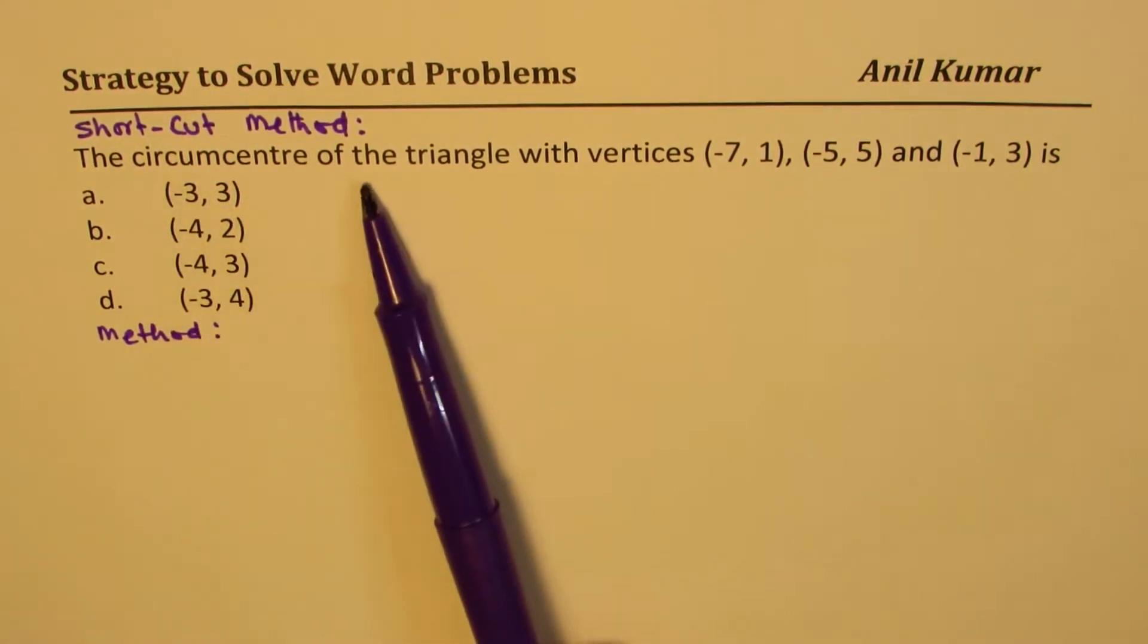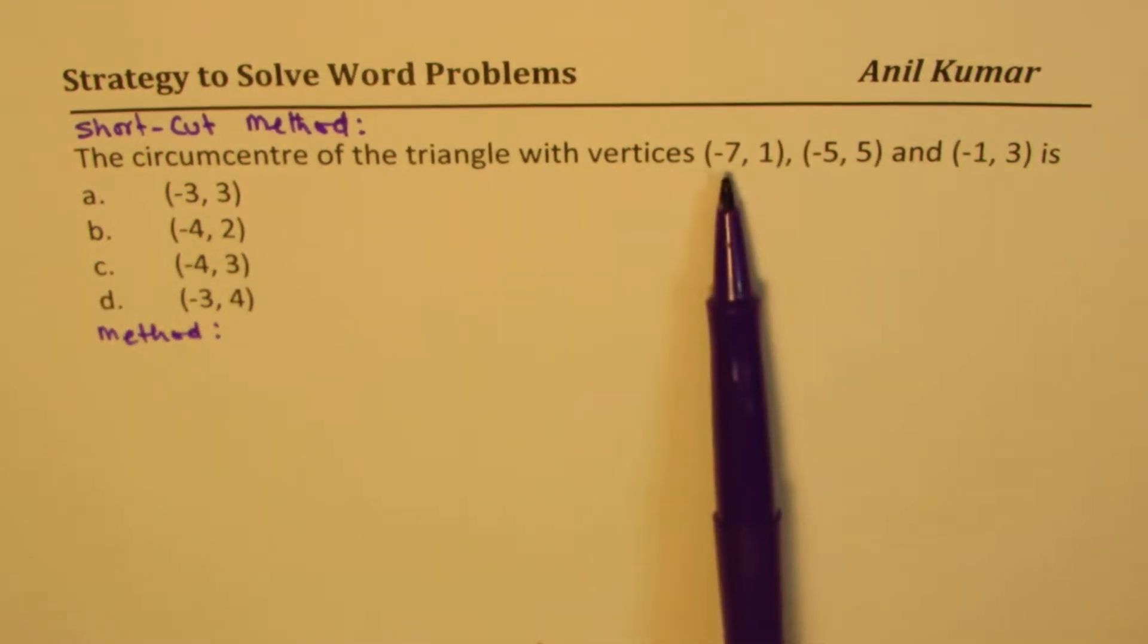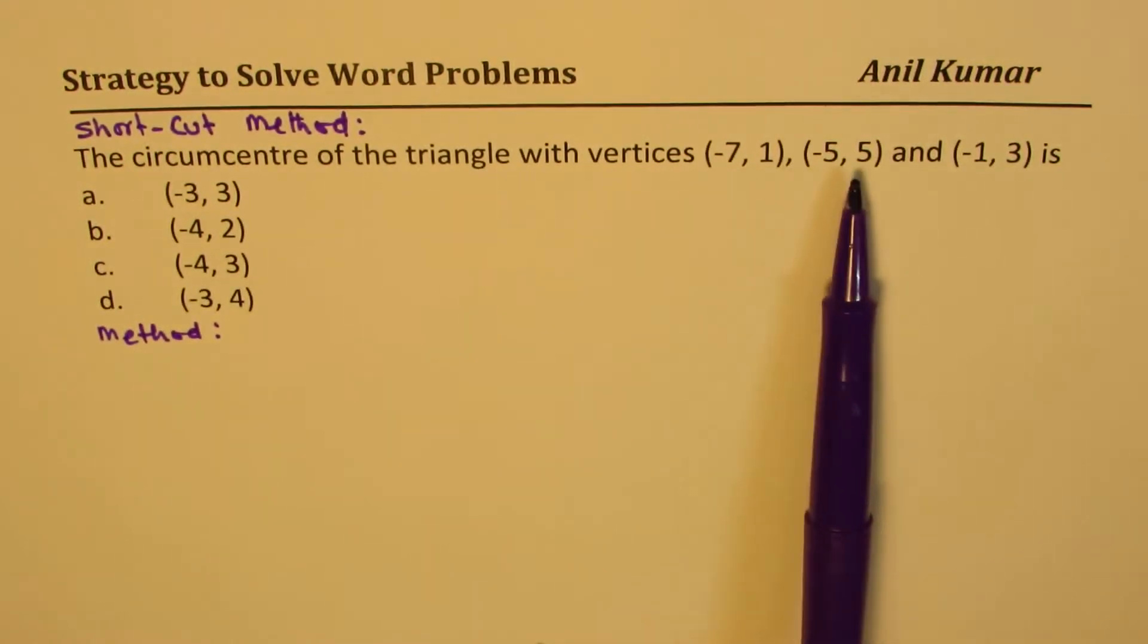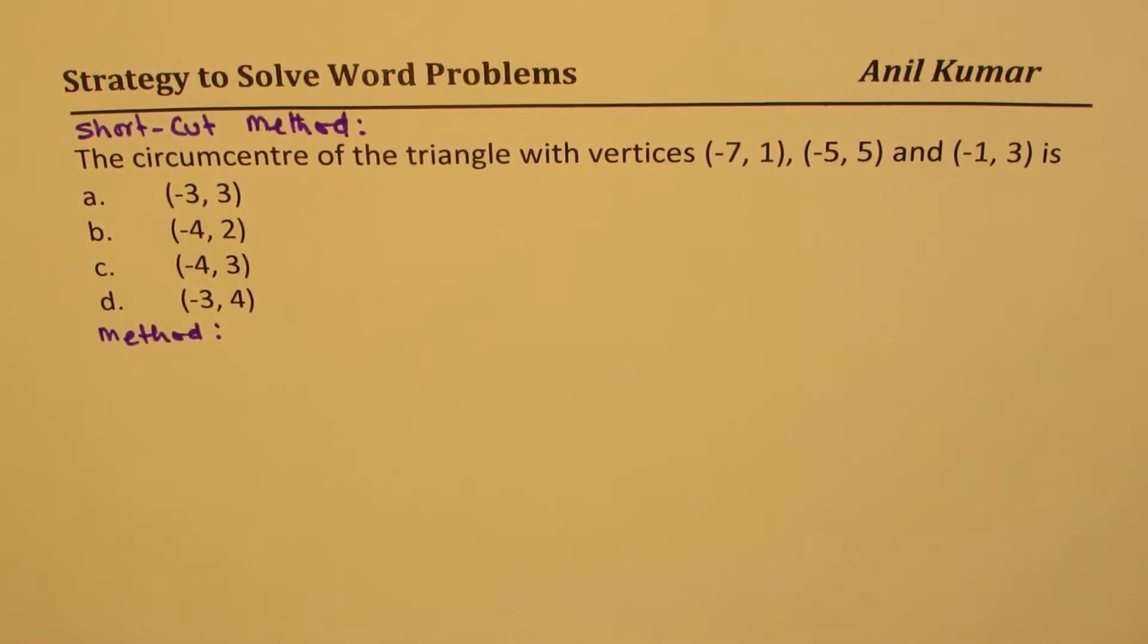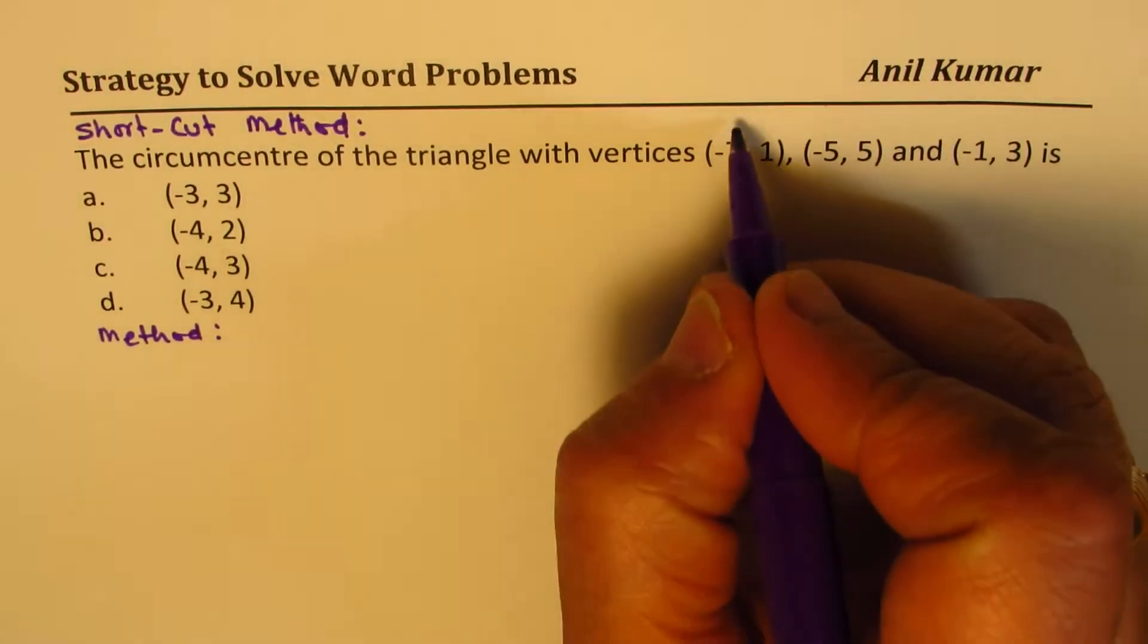We need to find the circumcenter of the triangle with the vertices (-7,1), (-5,5), and (-1,3). We are given four choices. Let's call them as a, b, and c.